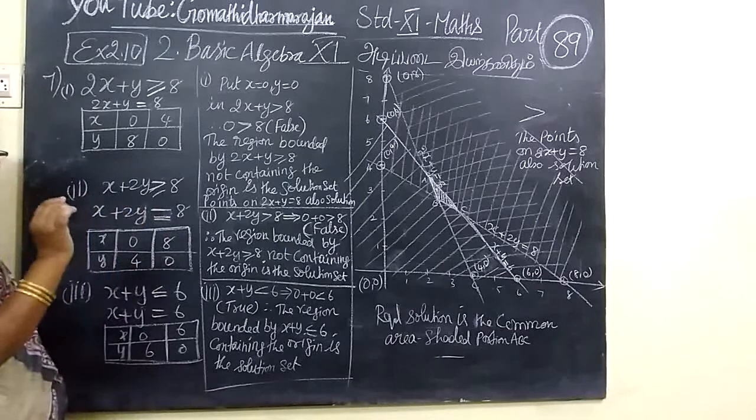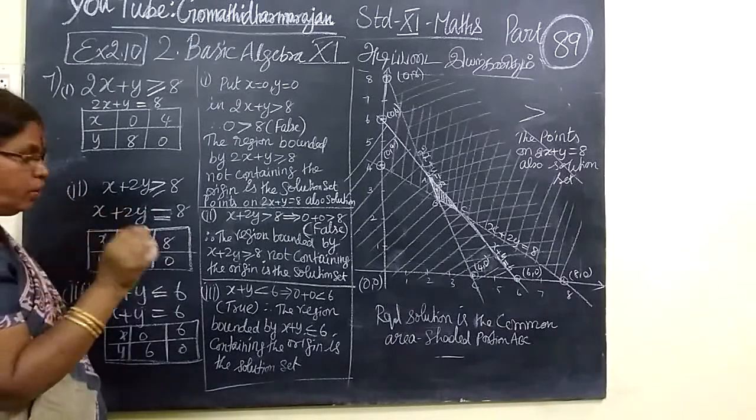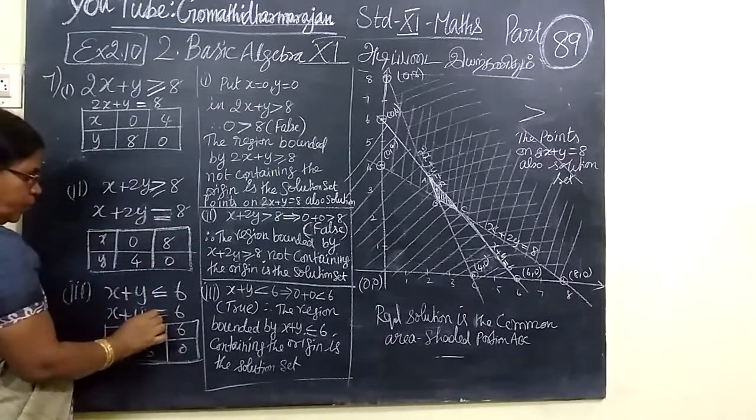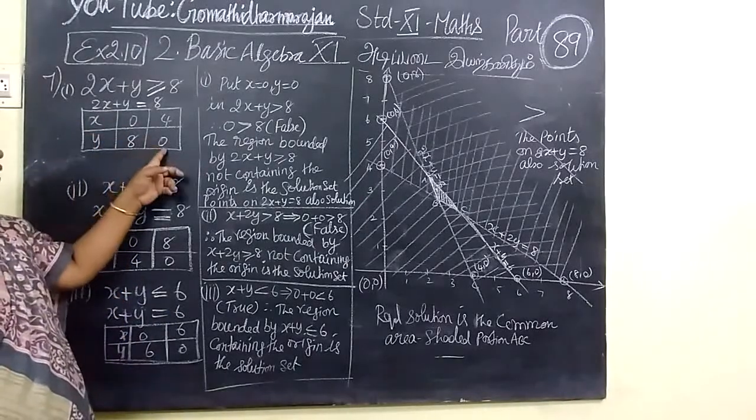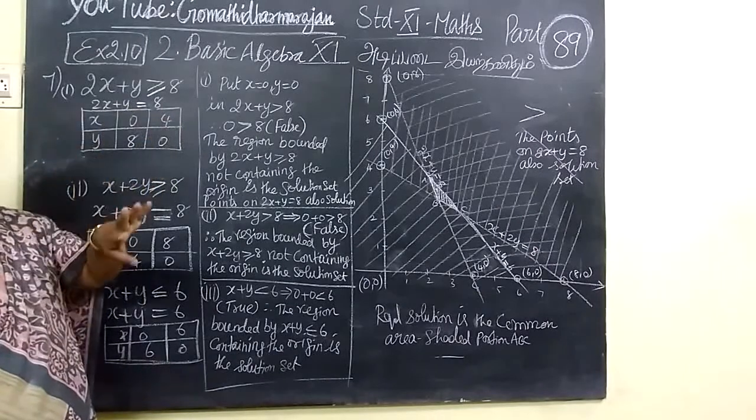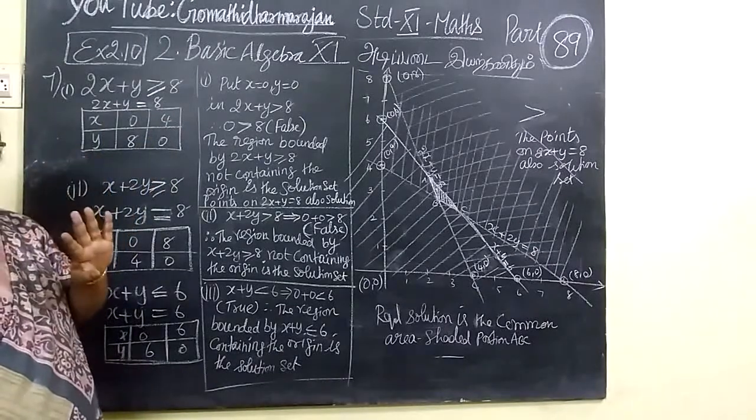When you want to draw the graph, put x equal to 0, find y. Then put y equal to 0, find x. To draw a straight line, we want only two points. So two points is there.